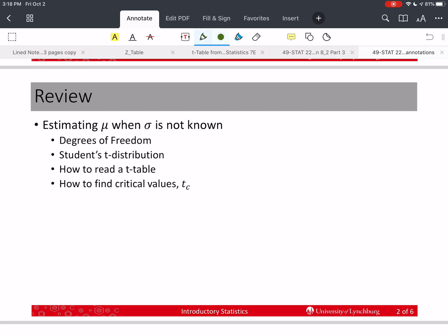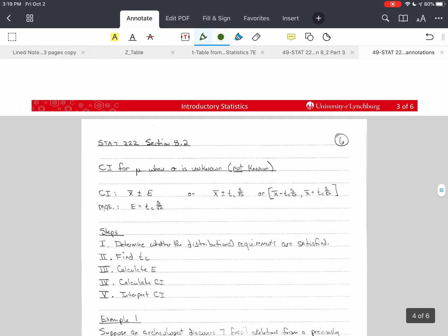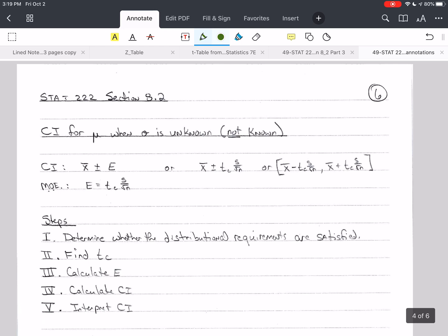Up to this point, we have been in this lecture series for section 8.2. We've introduced the student's t-distribution, talked about degrees of freedom, how to read a t-table, and find critical values t sub c. Now we're going to look at how we compute a confidence interval. I'm going to give you the formula for a confidence interval. The general form of this is x bar plus or minus e, where e is the margin of error.